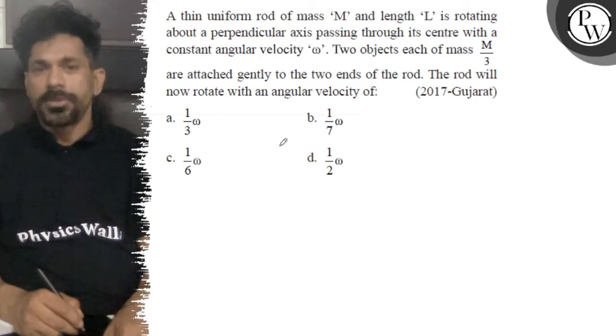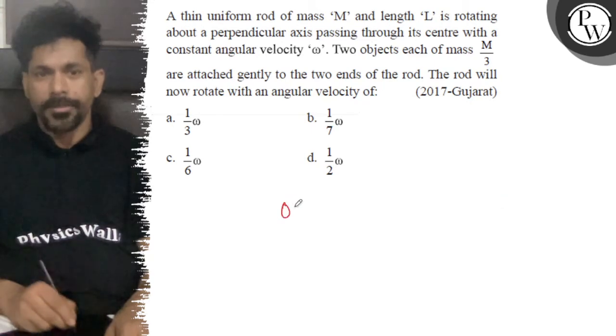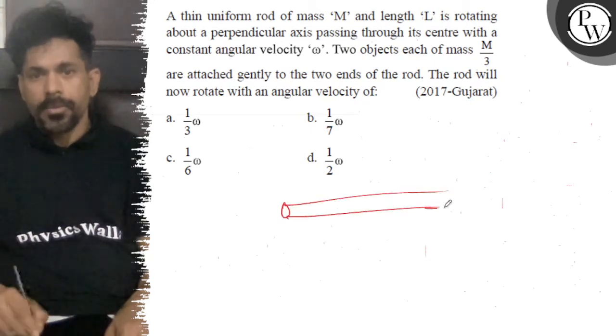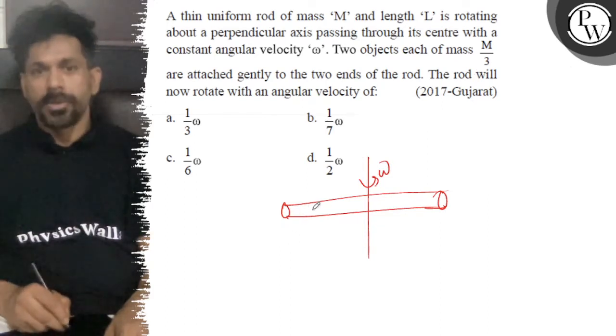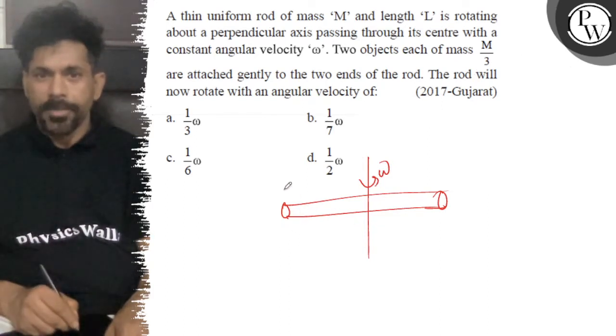Two objects each of mass m by 3 are attached gently to the ends of the rod. The rod will now rotate. So this previous rod, this rod will rotate with omega. It has the same length as m, and here we have two mass m by 3.